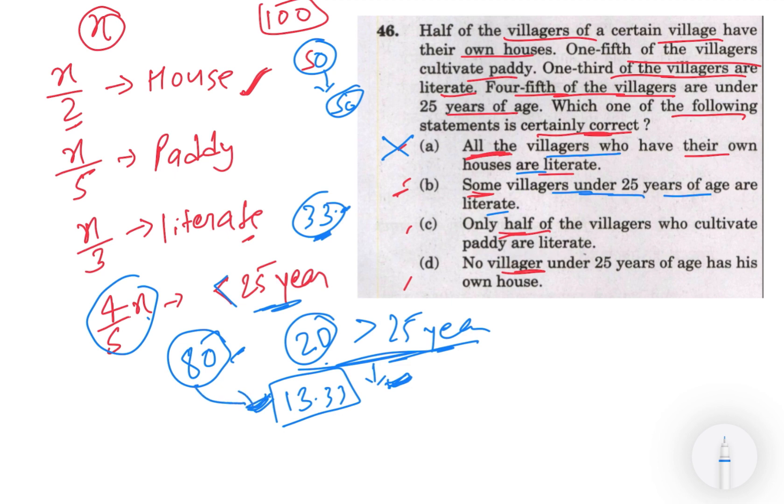Toh iska matlab some villagers under 25 year age, matlab yeh 13.33 hai, yeh 80 meh se hi aayega. Because agar hum 20 extreme case bhi leke rakhte hai ki 20 jo hai woh 25 saal se jyada umar ke hai, woh maan ke chal - yeh woh sab literate hai, toh hamara literate ka sankhya 33 hai.